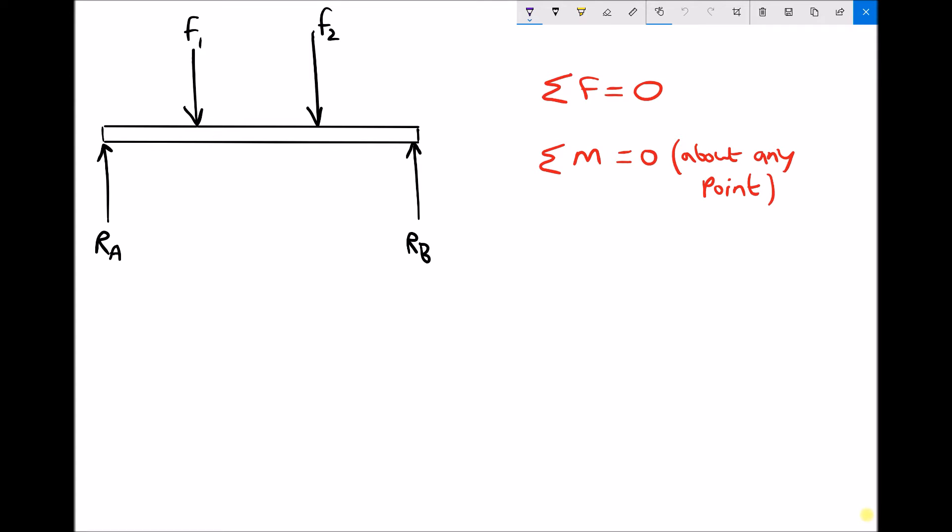The first one states that the sum of the forces must equal zero. What we see in this instance is we've got two forces pushing downwards, F1 and F2, and we have the support reactions at the two ends of the beam, Ra and Rb. For this first condition to be true for the beam shown, we're basically saying that the forces pushing down, F1 plus F2, equal the forces pushing up, Ra plus Rb.